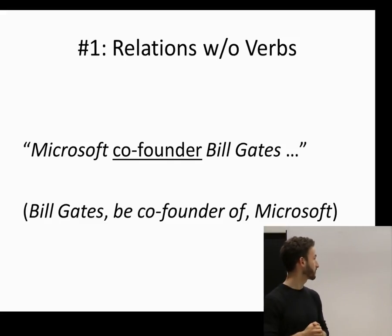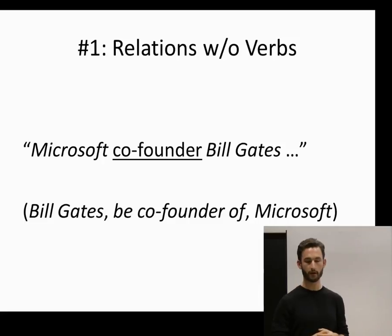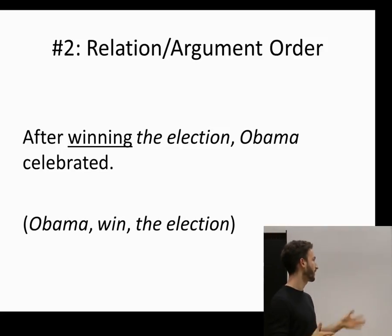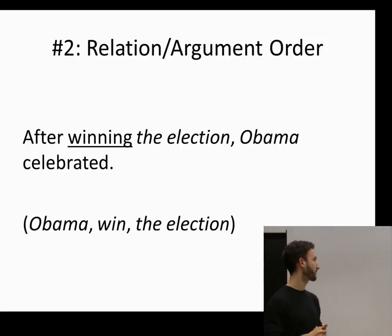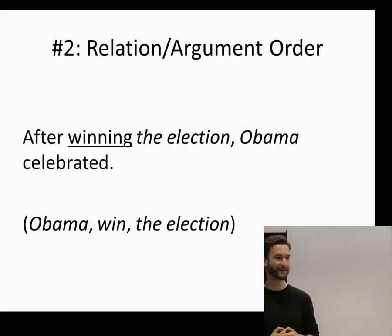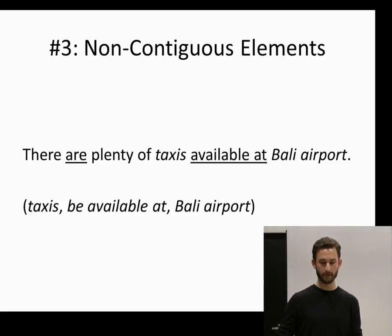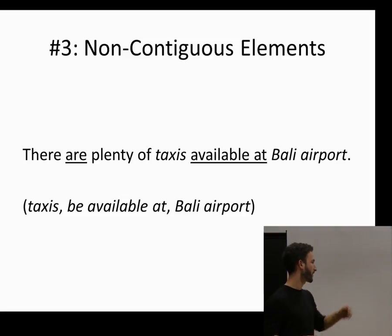Relations can definitely exist when they don't have verbs. I'll underline the relation and italicize the arguments. This sentence says that Bill Gates is the founder of Microsoft without using any verbs at all. Sometimes the relation and the second argument can precede the first, as in another example sentence — this is particularly challenging for a system based on part-of-speech that doesn't resort to a dependency parse. There are also elements that are non-contiguous: auxiliary verbs like 'are' followed by 'available at' can be interrupted by arguments.